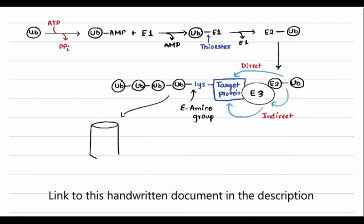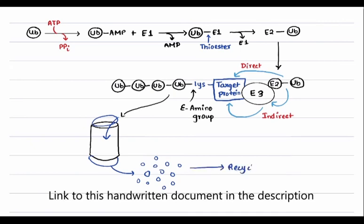After the target protein is bound to ubiquitin — that is, the polyubiquitin protein — it goes to the proteasome complex. It is recognized by the 19S and the protein is sent inside the 20S, which eventually degrades the protein into small amino acids. These amino acids can then be recycled to make other proteins. This is the whole process of proteasomal destruction.